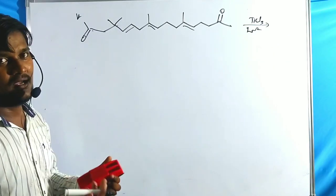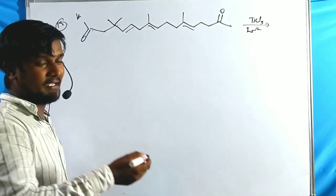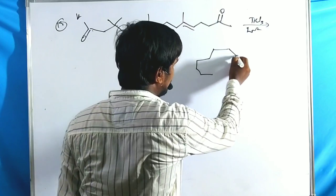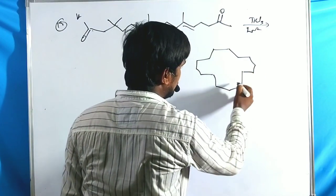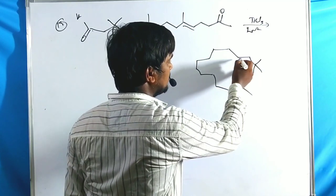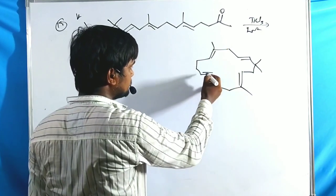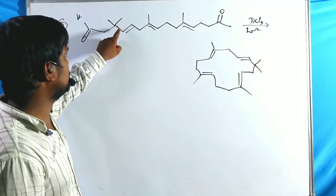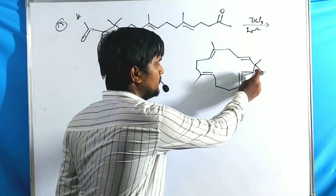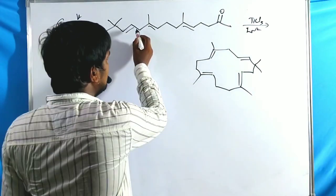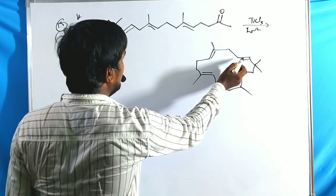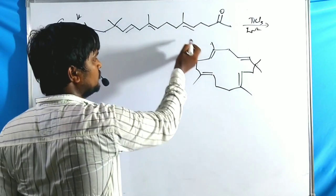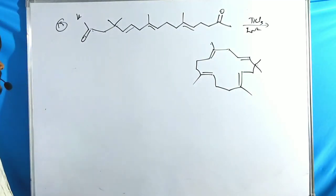The 19th example is an intramolecular reaction forming a large macrocyclic product. The starting material has two methyl groups, a double bond at the second position, another two methyl groups, a double bond, one methyl group, then a methyl double bond pattern — forming a large macrocyclic ring via intramolecular McMurray Coupling.